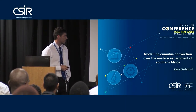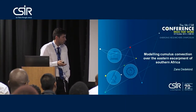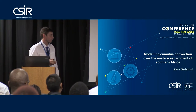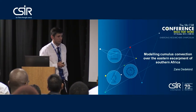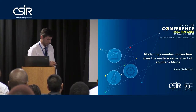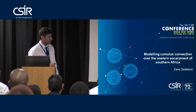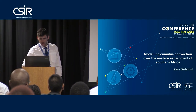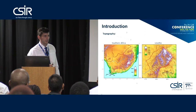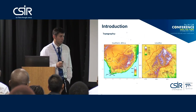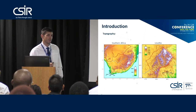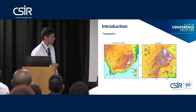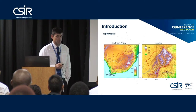I'll be talking about modeling cumulus convection over the eastern escarpment of South Africa. One of the first questions we might ask is why the eastern escarpment? One of the reasons is that models generally struggle over very steep topography with regards to rainfall simulations.